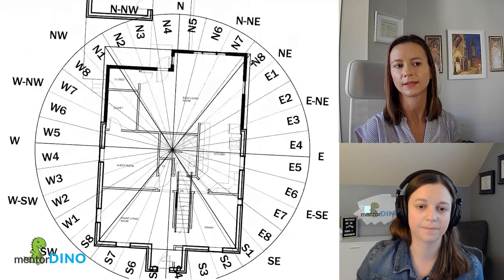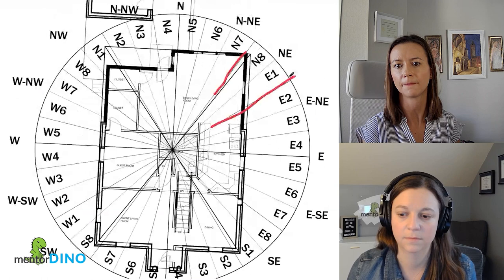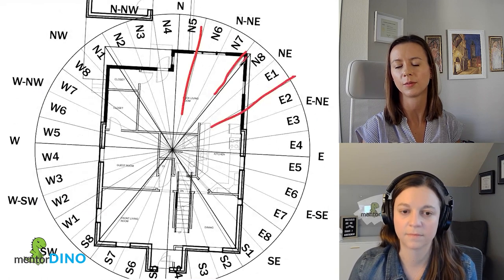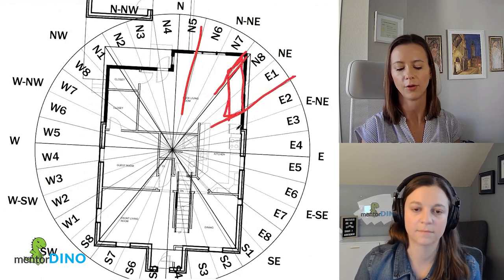And then yeah, so that makes sense because northeast, this area of the home has to do with mind and clarity. And then this is the north northeast, which has to do with health and immunity. So it would make sense that you're gravitating towards this area of the home as well.